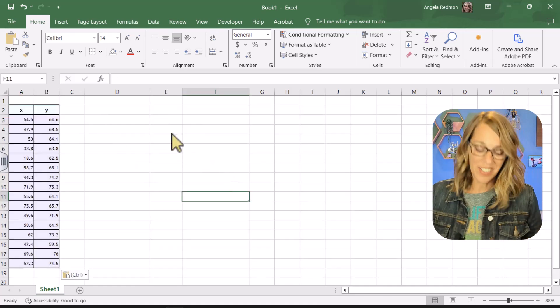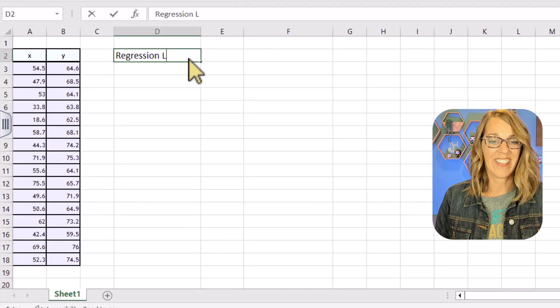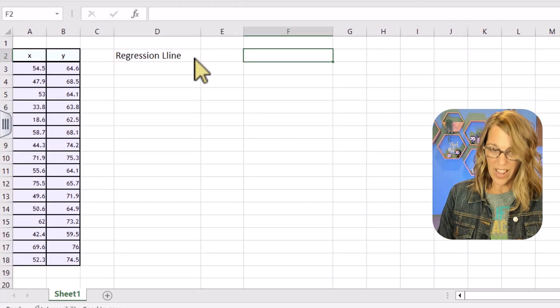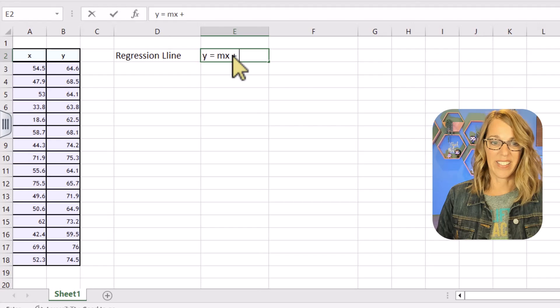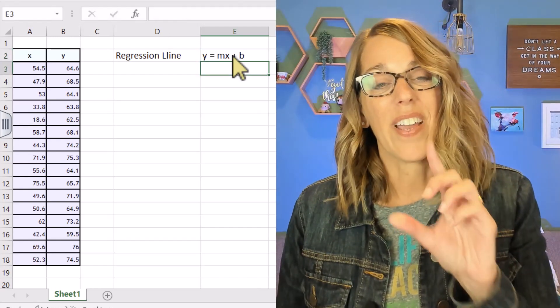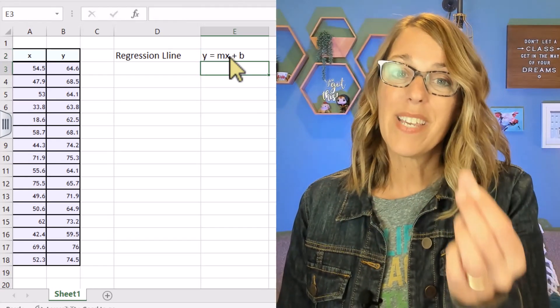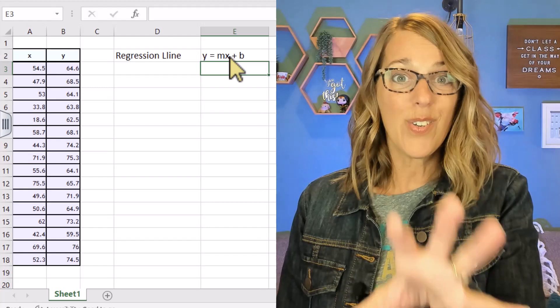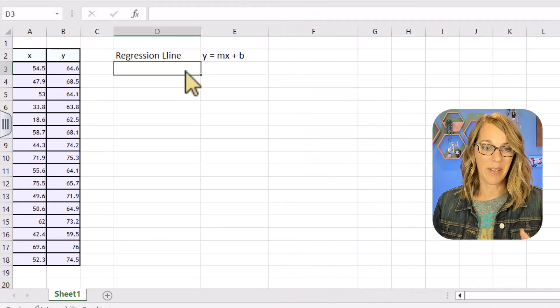Now my goal here is to find the equation of the regression line and that regression line is in the form y equals mx plus b. So I really need to find m which is my slope and b which is my y-intercept. I can do this without using a scatter plot. Let's do it.